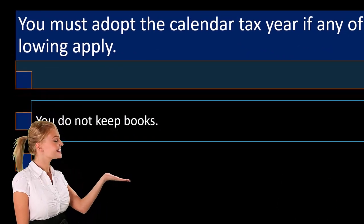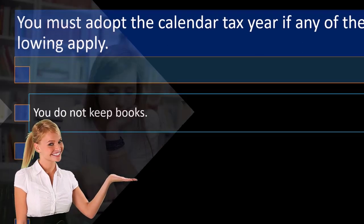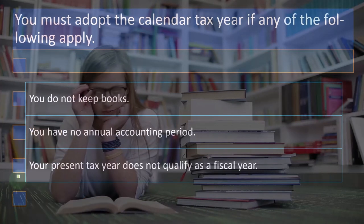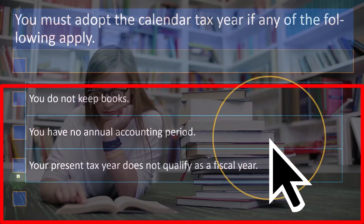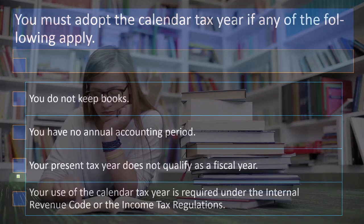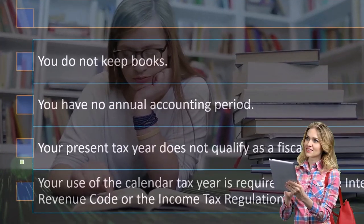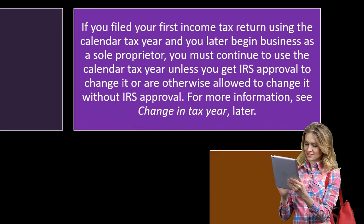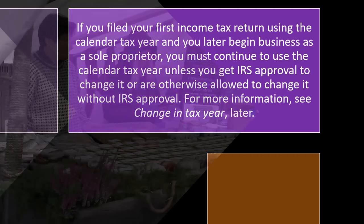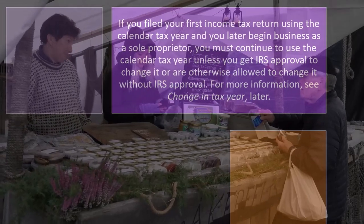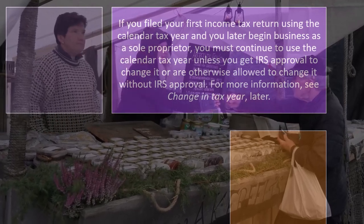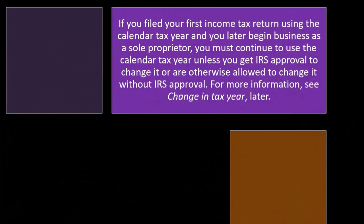Possibly, it depends on the situation. If these apply: you do not keep books, so you have no annual accounting period; your present tax year does not qualify as a fiscal year; or your use of the calendar tax year is required under the Internal Revenue Code or the Income Tax Regulations. If you filed your first income tax return using the calendar tax year and you later begin business as a sole proprietor, you must continue to use the calendar tax year unless you get IRS approval to change it or are otherwise allowed to change it without IRS approval.